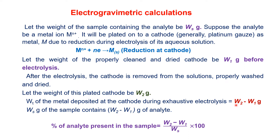So W2 minus W1 grams of metal will be present in sample Ws. Therefore, Ws grams of the sample contains W2 minus W1 grams of the analyte. The percentage of the analyte present in the sample equals (W2 minus W1) divided by Ws, multiplied by 100, giving us the amount of analyte in percentage form.